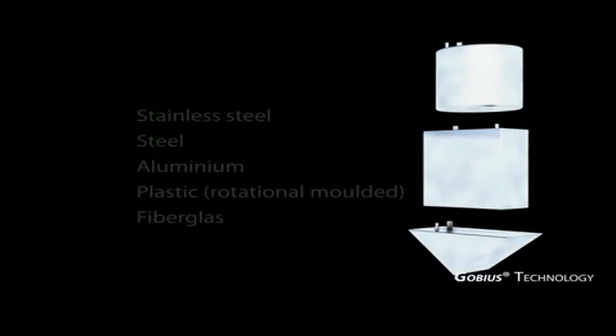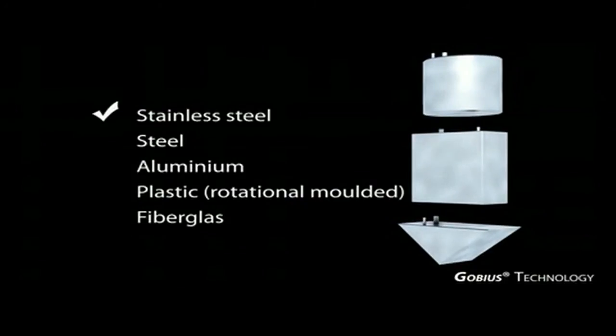Gobius can be used on stainless steel, steel, aluminium, plastics and fiberglass.